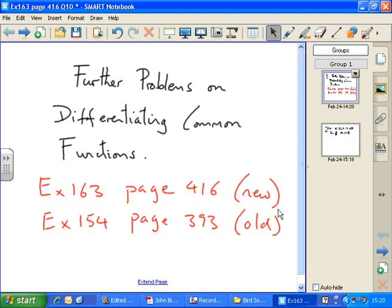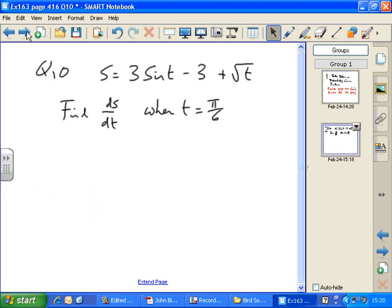Further problems on differentiating common functions. Question 10. There's a function s equals 3 sine t minus 3 plus the square root of t. We have to find ds/dt when t equals pi over 6.